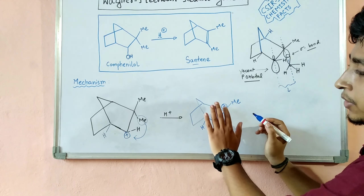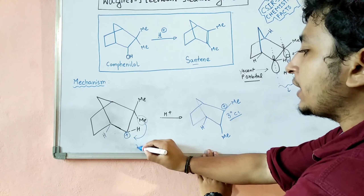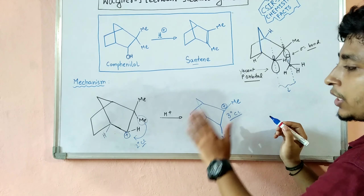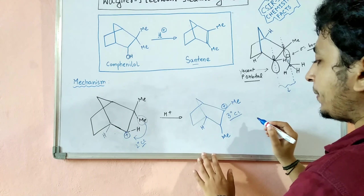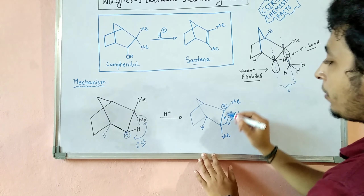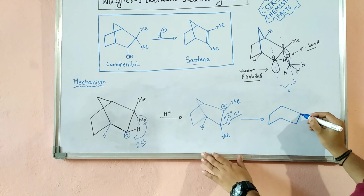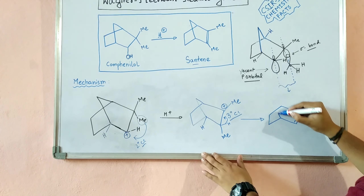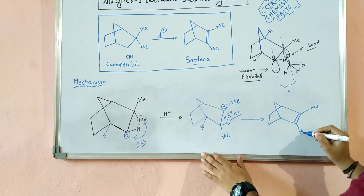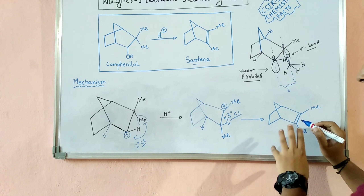After methyl migration, the positive charge comes to a tertiary carbon, while the previous carbocation was secondary. We know a tertiary carbocation is more stable than a secondary carbocation, so this is the stable species. Now, a hydrogen is eliminated and a double bond forms. This double bond is with carbons that are not bridge carbons, making this the stable product.